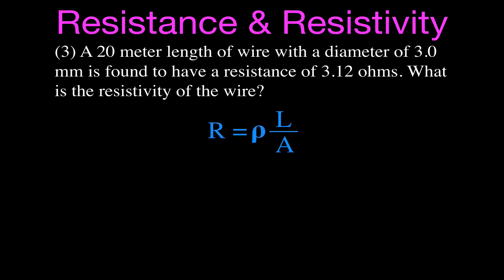For problem number three, we have a 20-meter length of wire with a diameter of 3 millimeters and a resistance of 3.12 ohms. We want to find the resistivity of that wire. We're given the resistance, the length, and the diameter — so we get the area — and this time we solve for resistivity: rho equals resistance times cross-sectional area divided by length.